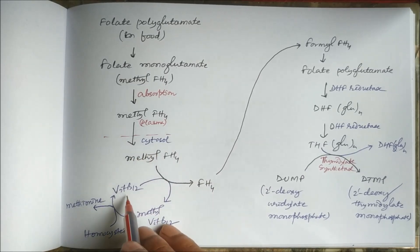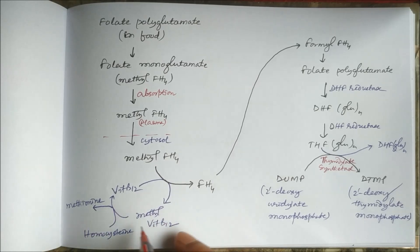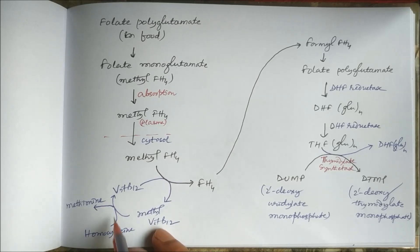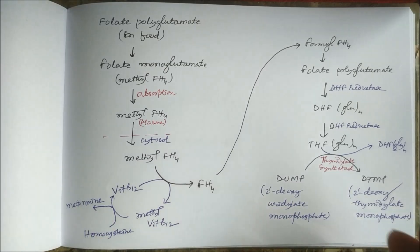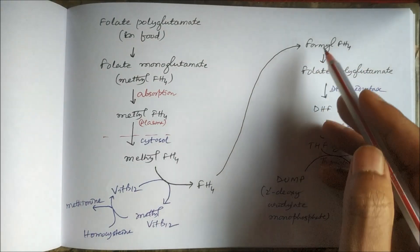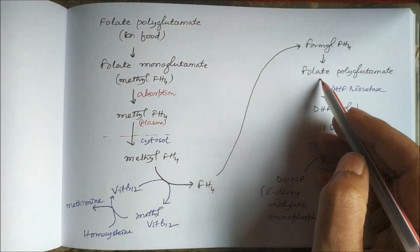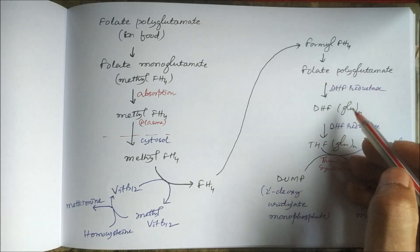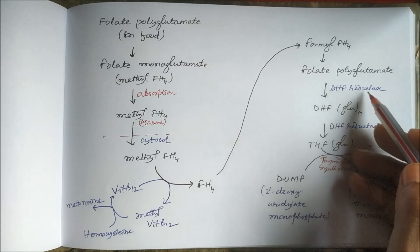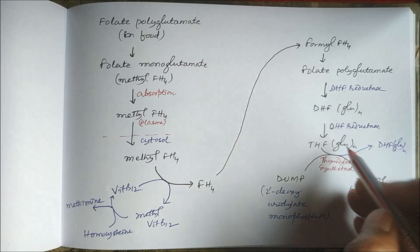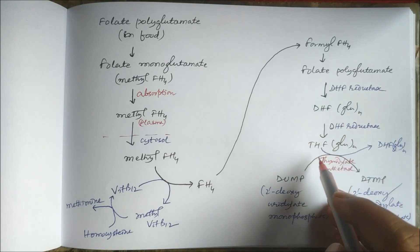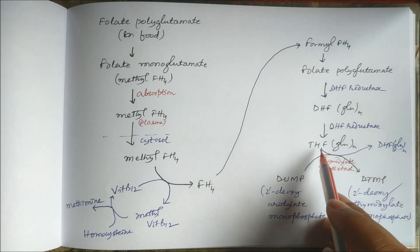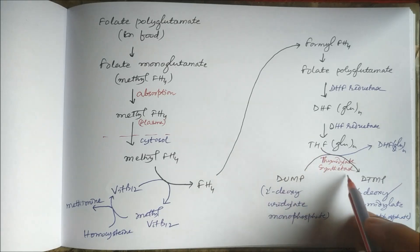The methyl group is taken up by vitamin B12 to form methyl-vitamin B12, which then releases the methyl to homocysteine so that homocysteine forms methionine. Tetrahydrofolate then forms formyl tetrahydrofolate, and folate polyglutamate is formed inside the cytosol. By the action of dihydrofolate reductase, it forms dihydrofolate polyglutamate, and then tetrahydrofolate polyglutamate, which acts as a coenzyme to the enzyme thymidylate synthetase.